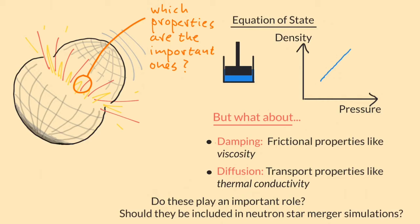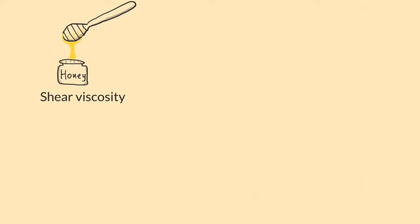Shear viscosity measures how much a fluid resists when you try to make it flow. Honey, for example, has a high shear viscosity, whereas water is much less viscous. Thermal conductivity measures how quickly heat spreads through a material, from hotter regions to their cooler neighbours.